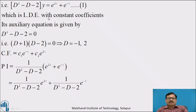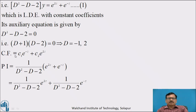This is a linear differential equation with constant coefficients. Its auxiliary equation is f(D) equal to 0, that is D squared minus D minus 2 equal to 0. Factors of this quadratic polynomial are (D plus 1)(D minus 2) equal to 0, giving D equal to minus 1 and 2. Both roots are real and distinct. Therefore, the complementary function is CF equal to c1 e raised to minus z plus c2 e raised to 2z.